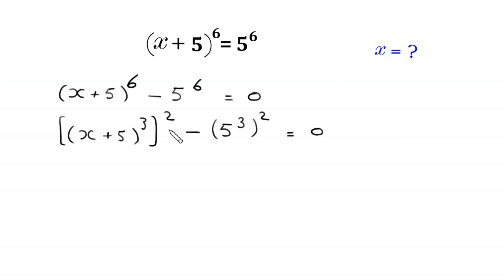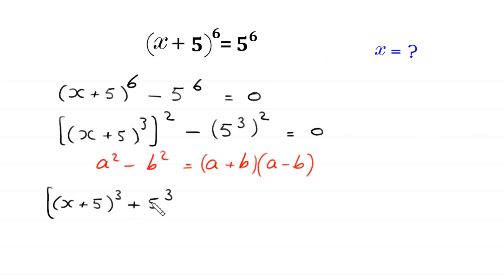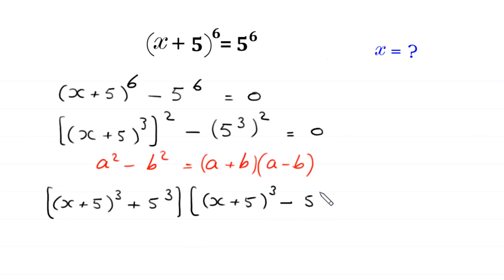Now we have a difference of two squares. By using the algebraic identity a² minus b² equals (a + b)(a − b), this expression factors into [(x + 5)^3 + 5^3] times [(x + 5)^3 − 5^3] is equal to 0.